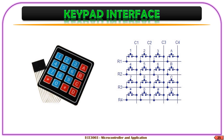For example, if key 5 has been pressed, what happens is the circuitry gets closed and accordingly R2 and C2 will start sending data, and we have to read the output by scanning through each row and column.